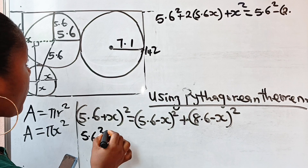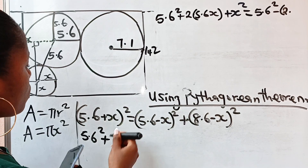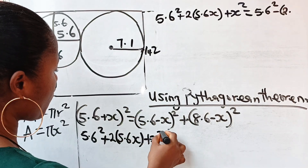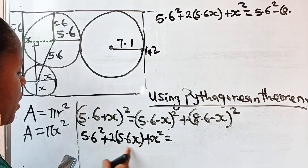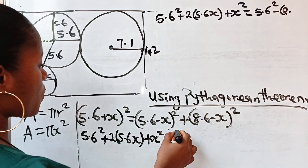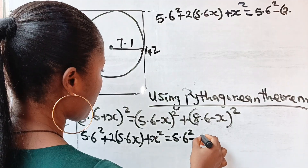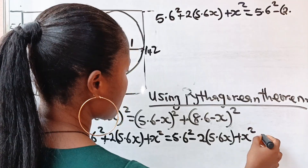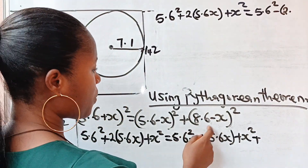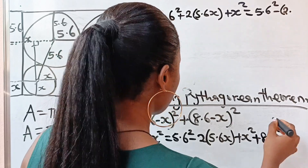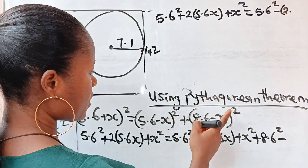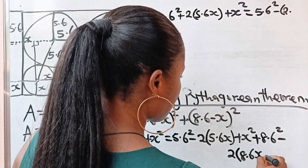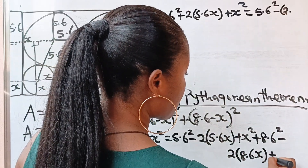So we have: 5.6² + 2(5.6)x + x² equals 5.6² − 2(5.6x) + x², then plus 8.6² − 2(8.6)x + x². So the right side includes 8.6² minus 2 times 8.6 times x, then minus x squared plus x squared.